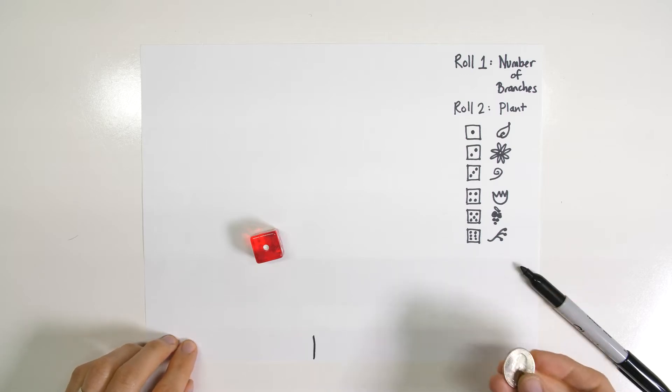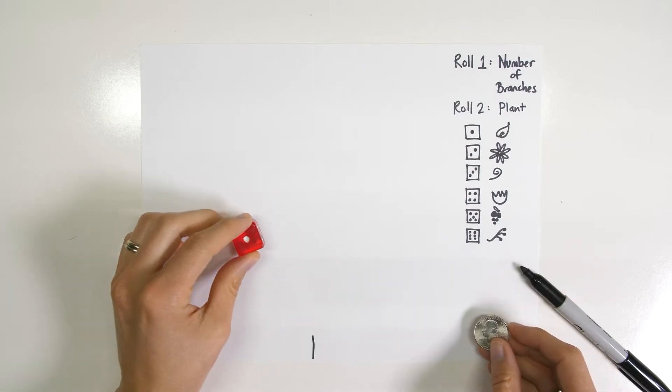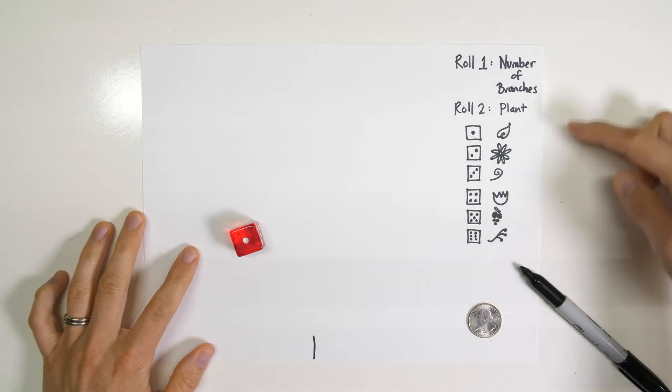I've created some here, but you can create any kind of rules that you want using random objects like a coin, a spinner, or a die. You just need something that will give you random outcomes and then some rules.